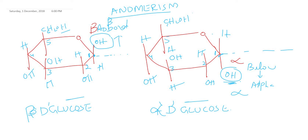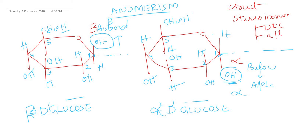In summary, isomerism can be structural isomerism or stereoisomerism. Stereoisomerism has four types: D and L isomers, optical isomerism (small d/plus or small l/minus), epimerism, and anomerism. Thanks for watching.